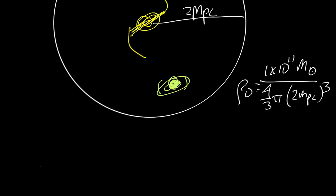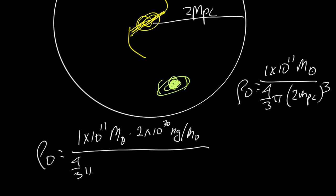Now those are not particularly useful units. So let's convert into MKS. So we get rho0 is equal to 1 times 10 to the 11 solar masses, and there are 2 times 10 to the 30 kilograms per solar mass. So that's the top part of the equation. Bottom part we have 4 thirds pi, and we have 2 megaparsecs. And a megaparsec, there are 3.09 times 10 to the 22 meters per megaparsec. That whole thing is cubed.